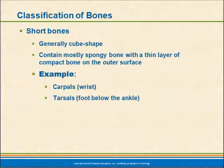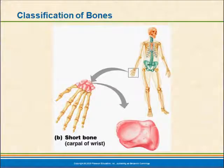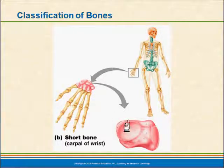Short bones are generally cube-shaped and contain mostly spongy bone with a thin layer of compact bone on the outer surface. They are approximately as long as they are wide — about the same thickness, more or less cube-shaped. Examples of these are the carpals of the wrist, of which we have eight in each wrist, and the tarsals of the foot, which we also have eight of. Here's a graphic example showing those bones in red — those are our carpals, and they would all be considered cuboid.